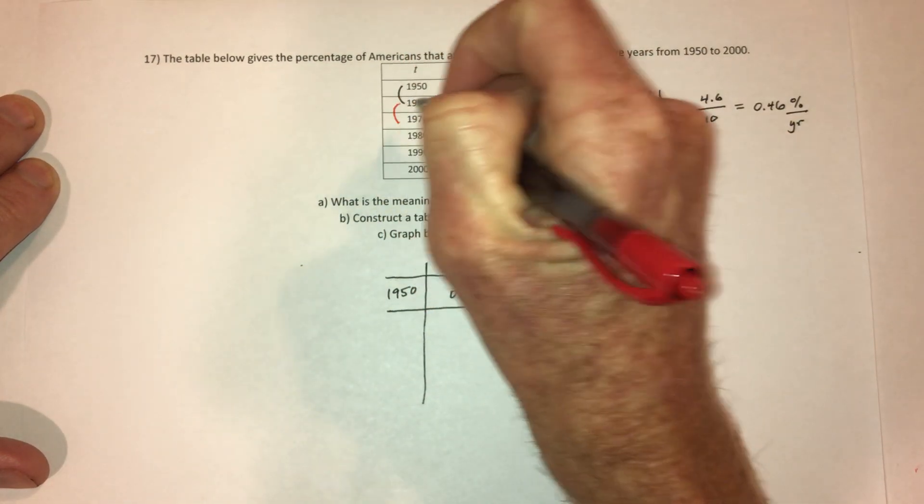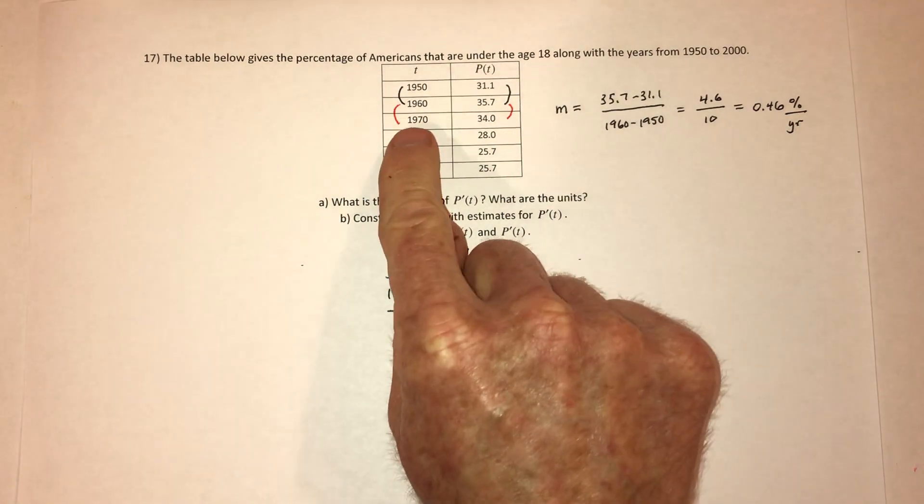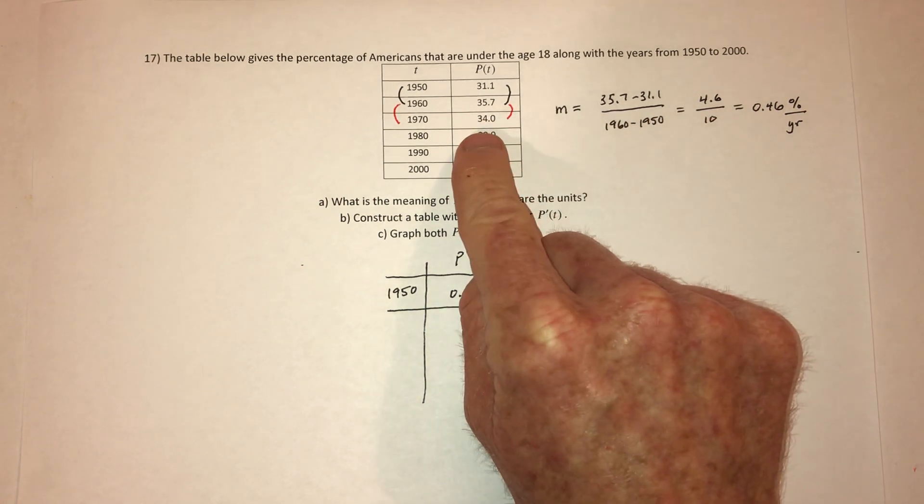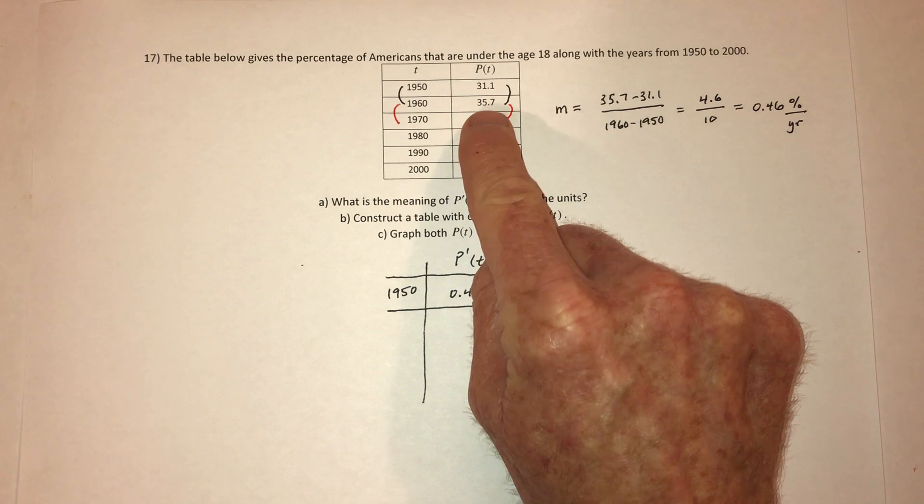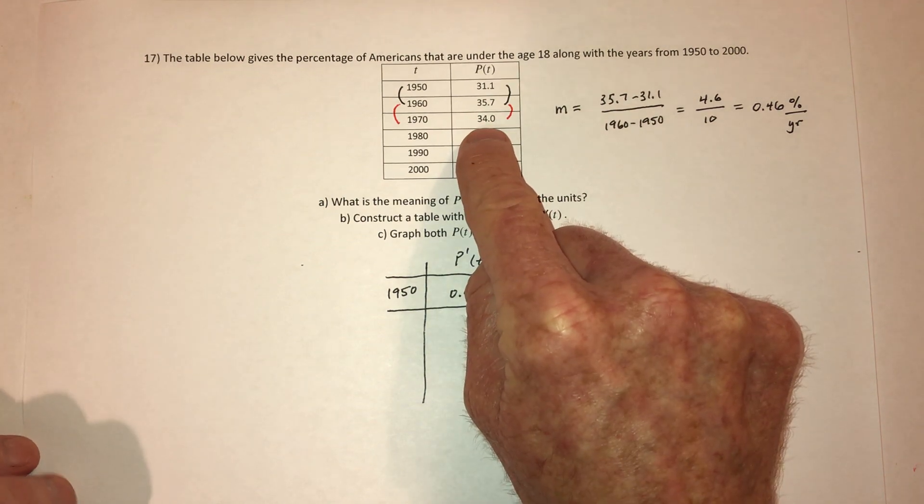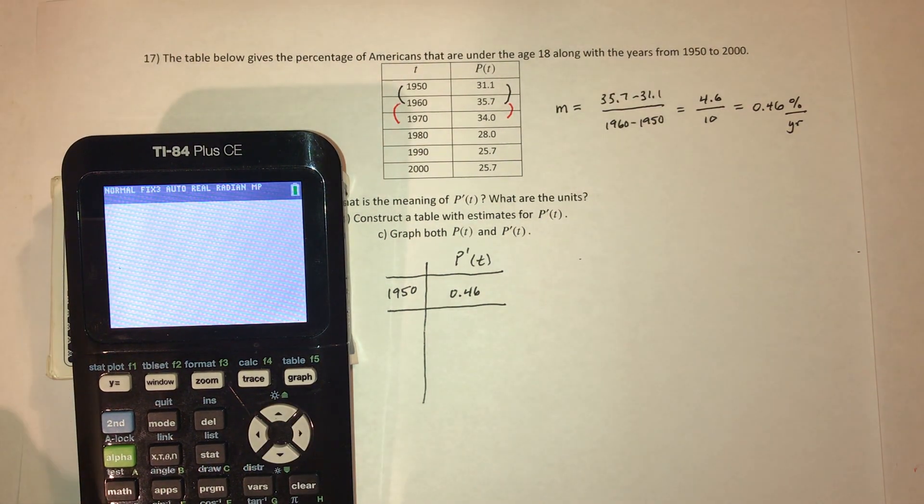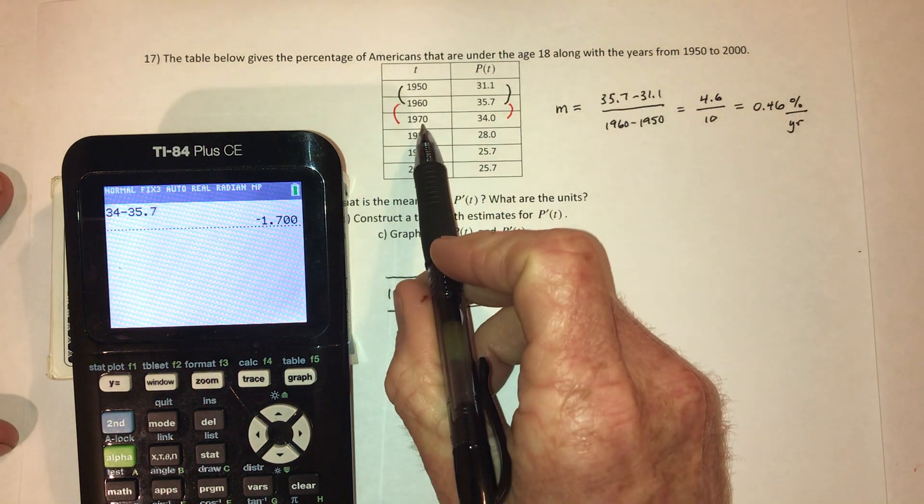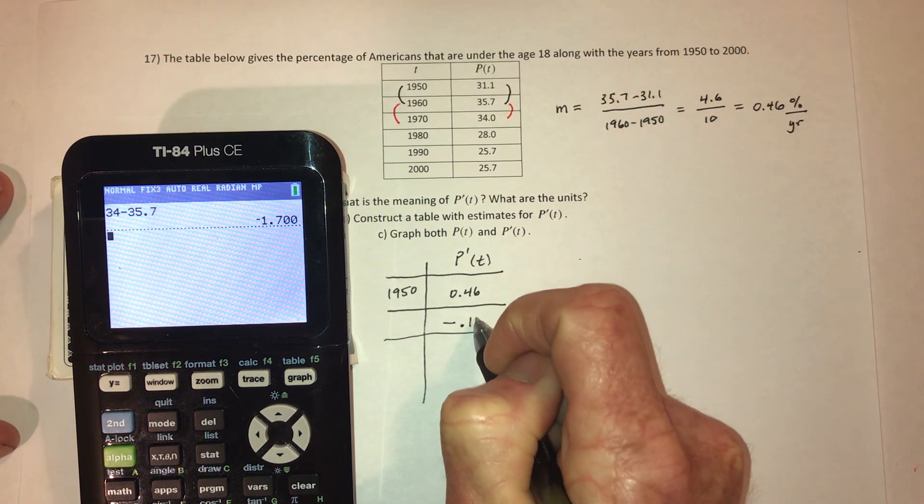And now do the next pair from 1960 to 1970. So each one, it's going by 10 years. So each one is going to be divided by 10. So I can speed things up because dividing by 10 is very easy. All I really need to do is subtract these two. And then it needs to be the Y2 minus the Y1. So it needs to be 34 minus 35.7. That is going to be negative 1.7. And then divide that by 10. So that's going to be negative 0.17% per year.